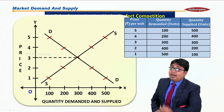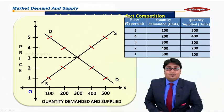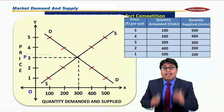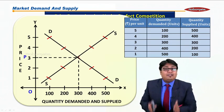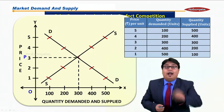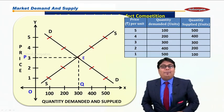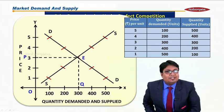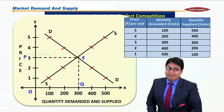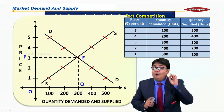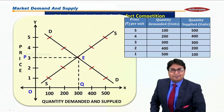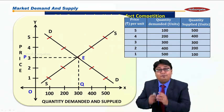Now both my demand and supply curves intersect each other when price is rupees 3 and quantity is 300. The price at which both demand and supply are equal is known as equilibrium price, which is denoted by E.